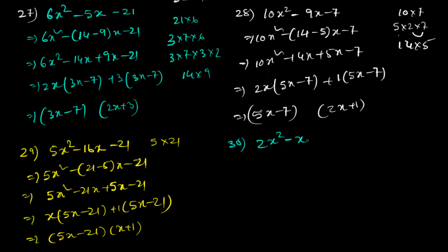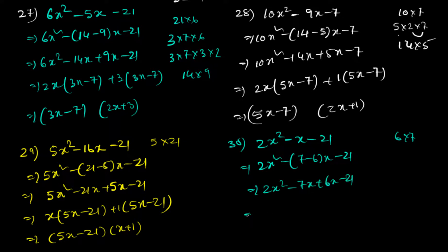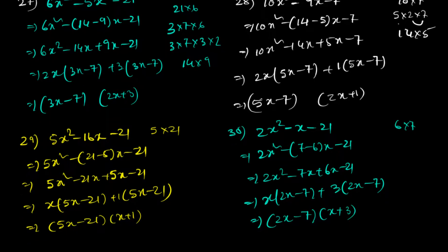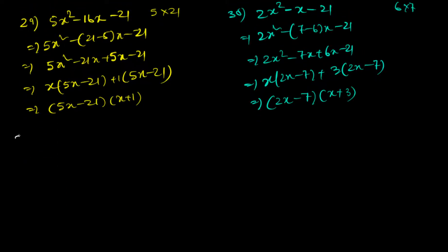Question 30: 2x² minus x minus 21. So 2 times 21 is 42, and 6 times 7 is 42. So: 2x² minus 7x plus 6x minus 21. Taking x common gives (2x minus 7), taking 3 common gives (2x minus 7). The answer is (2x minus 7)(x plus 3).